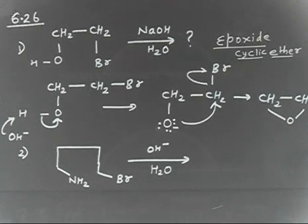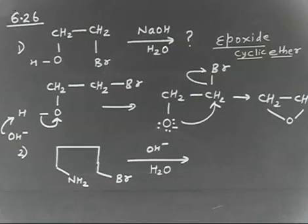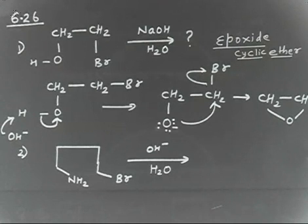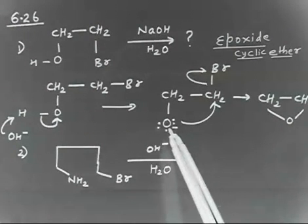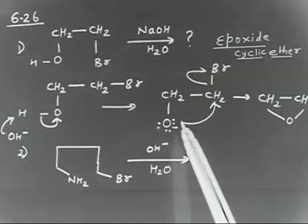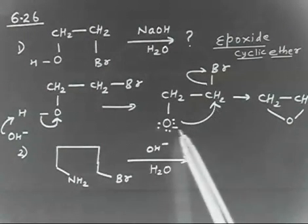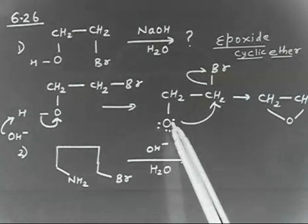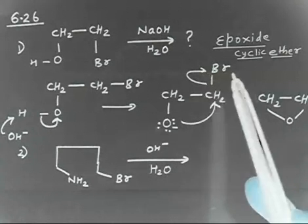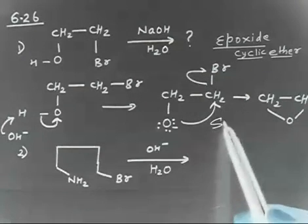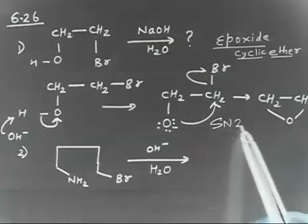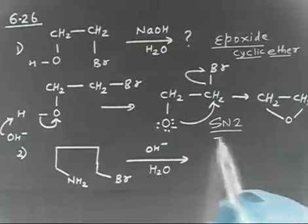OH⁻ again acts as a base — it takes H⁺ from NH2, making NH⁻. Then the NH⁻ does an intramolecular attack on the carbon bearing Br. This reaction is intramolecular because the nucleophile is attacking within the same molecule — it is an intramolecular SN2 kind of reaction. The nucleophile attacks, Br leaves.